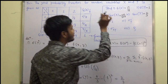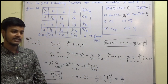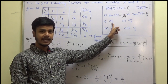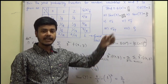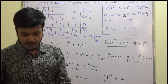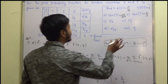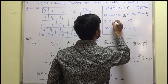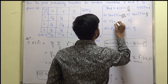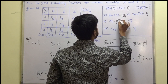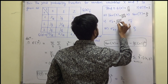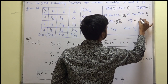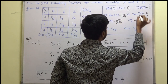Now we find standard deviations. Standard deviation of x is the square root of 233 upon 324, and standard deviation of y is the square root of 2 by 3.